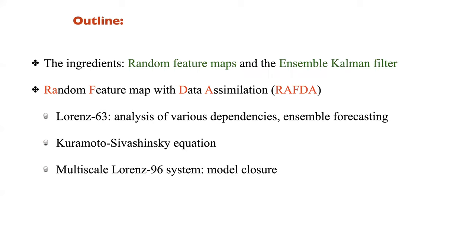The talk will cover: background on random feature maps and how we combine them with data assimilation (RAFTER); numerical results on Lorenz 63, studying dependencies on reservoir size dr, training data size, and noise strength; ensemble forecasting using RAFTER; a slide on the Kuramoto-Sivashinsky PDE; and finally a multi-scale Lorenz 96 system where RAFTER performs model closure for the slow dynamics.